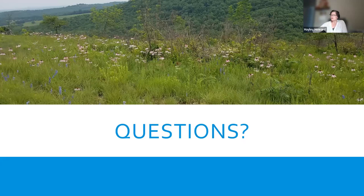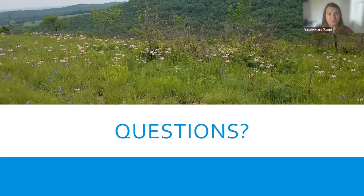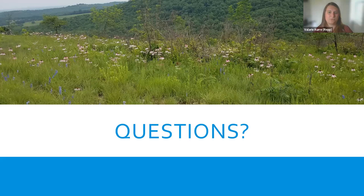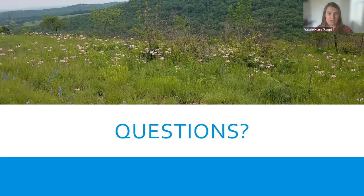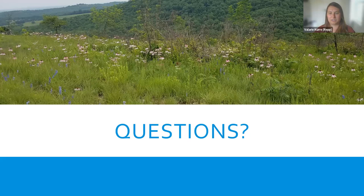Craig asked if you can treat stumps with Tordon RTU. Yes. The active ingredient is a 2,4-D and triclopyr mix. As I cautioned earlier, because of Tordon's formulation, you have to be careful even with cut stump treatment — it can affect surrounding desirable trees and shrubs. If you want to do cut stump and avoid that problem, I'd stick with just a triclopyr formulation. Garlon 3 or Garlon 4 would be great alternatives — you wouldn't have to worry about it spreading to plants you don't want to kill.